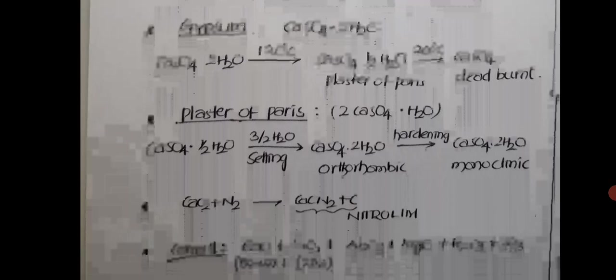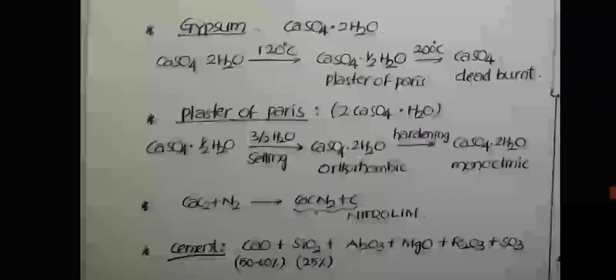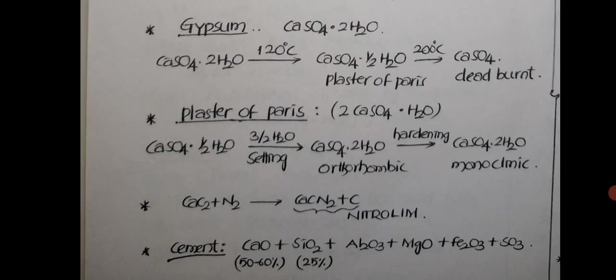Gypsum is CaSO4·2H2O. On heating at 120 degrees Celsius it turns into CaSO4·½H2O, which is known as plaster of Paris. Further heating at 200 degrees Celsius, it becomes dead burnt gypsum, CaSO4. Plaster of Paris is 2CaSO4·H2O or CaSO4·½H2O. When water is added to this, it first becomes orthorhombic dihydrate, then slowly becomes hard and becomes monoclinic dihydrate. First step is called setting, second step is called hardening. In setting orthorhombic is formed, in hardening monoclinic dihydrate is formed. Very special.